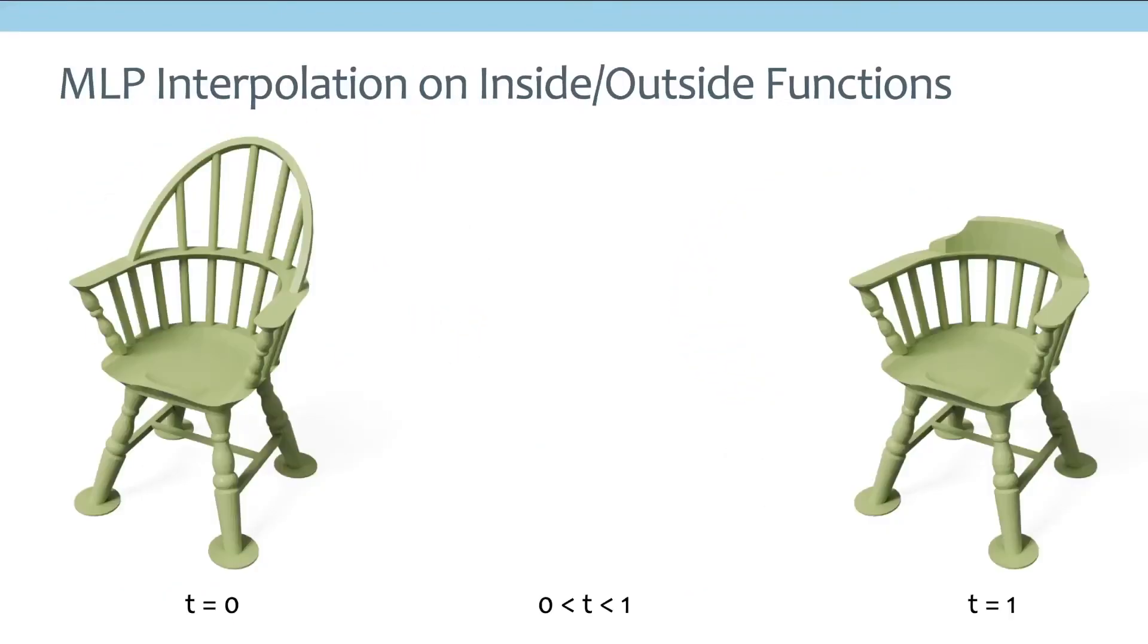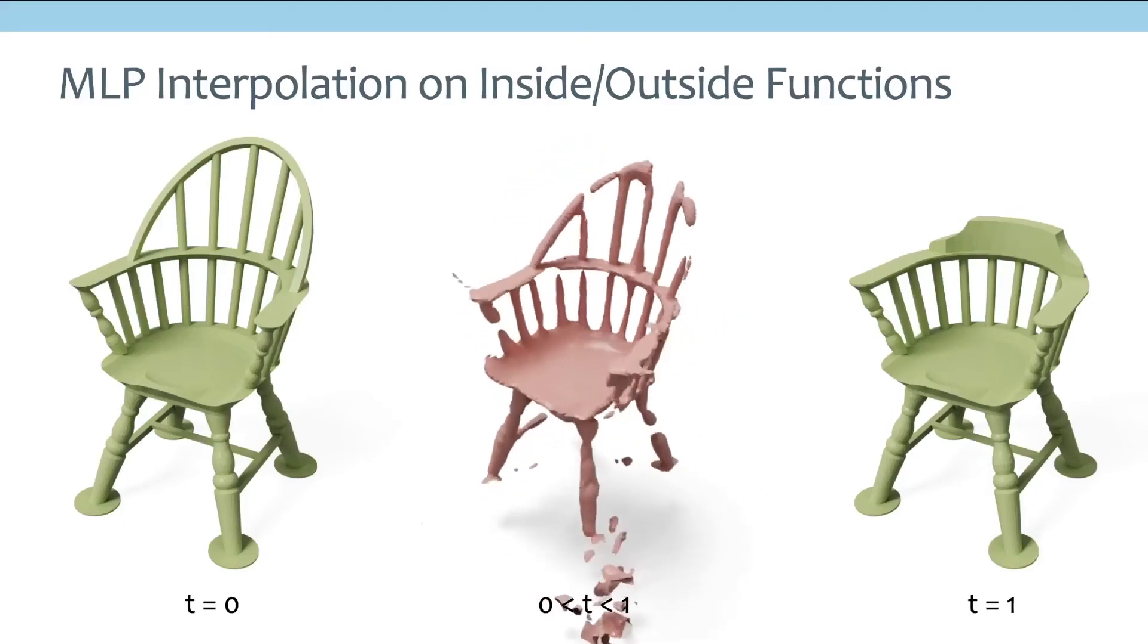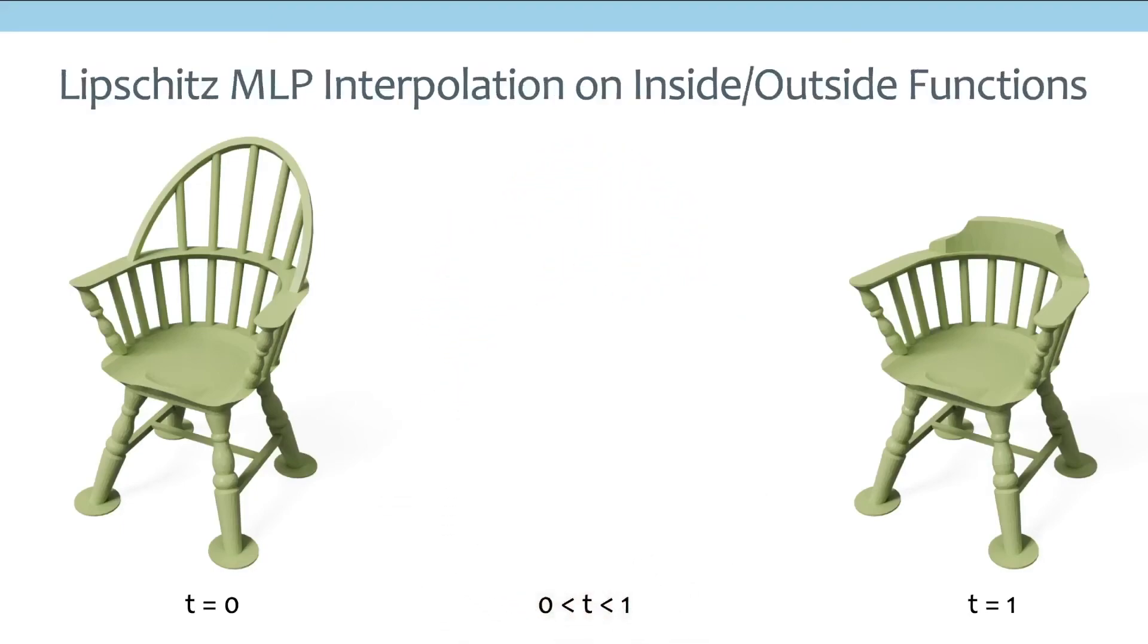Although most of the examples we showed earlier are interpolating signed distance functions, our method can also be used to interpolate occupancy functions. So in this case, if we use standard MLP, we will get a non-smooth interpolation result as we can see here. But if we switch to a Lipschitz MLP, then we will be able to obtain a very smooth interpolation like this one.